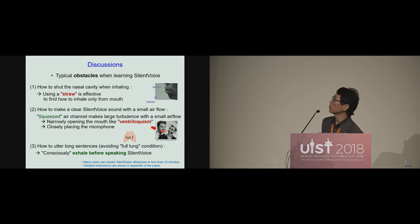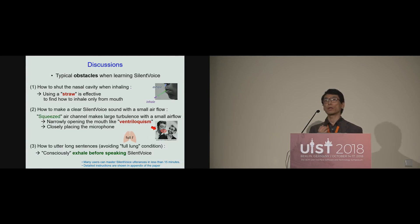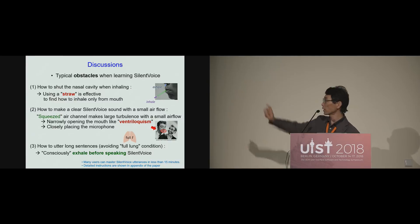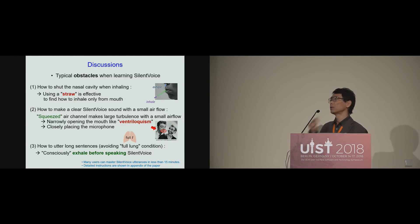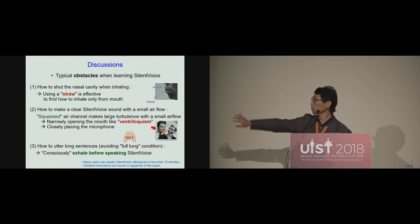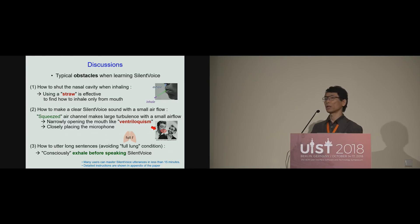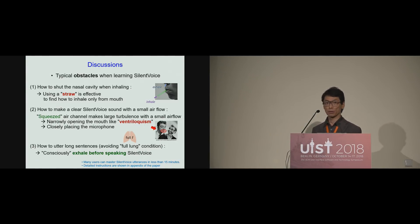There are some tips. The first tip is how to shut the nasal cavity when inhaling. When inhaling from the mouth, a lot of airflow still comes from the nasal passage. To prevent this, it is very effective to imagine using a virtual straw for inhaling. The second tip is ventriloquism: a narrowly opened mouth is very effective for making a clear silent voice sound. The third tip is how to utter long sentences. Some users complain they cannot speak long sentences because their lungs become full. This is because we unconsciously inhale before speaking — a normal habit. But it's not good for silent voice; in silent voice, we have to consciously exhale before speaking.